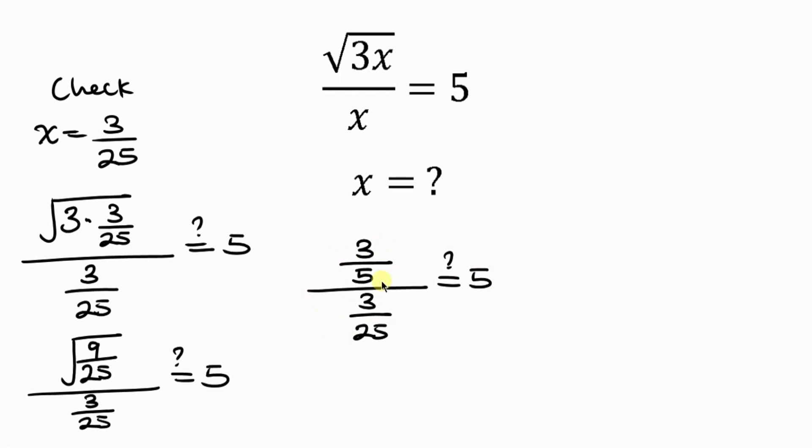This expression can also be written as the numerator, which is 3 over 5, divided by 3 over 25. Now, this becomes 3 over 5. We're going to be changing this division to multiplication, and we'll flip 25 and 3. 25 becomes the numerator, while 3 becomes the denominator.